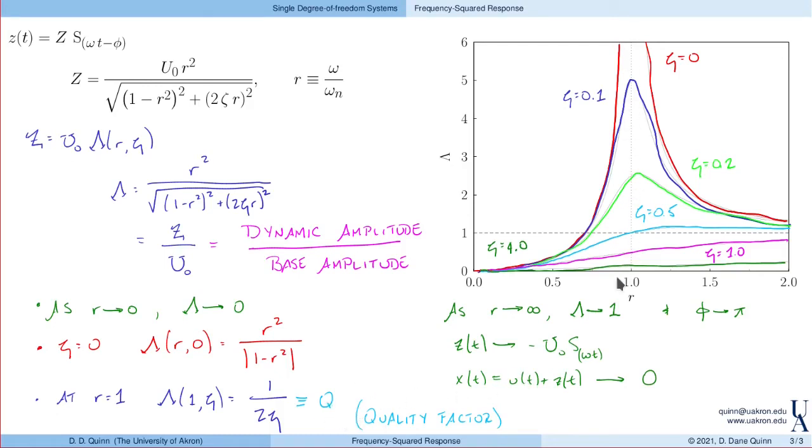That's our quick description and solution to systems that are forced with frequency squared excitation. We built this on our previous answer when we looked at constant amplitude forcing, and we just made sure that that amplitude of the forcing had frequency squared dependence. But again, this is a fairly common kind of problem in mechanical vibrations, and so it gets its own treatment.